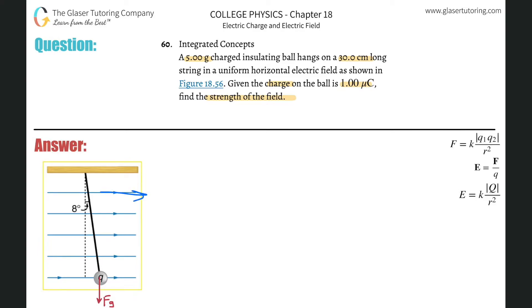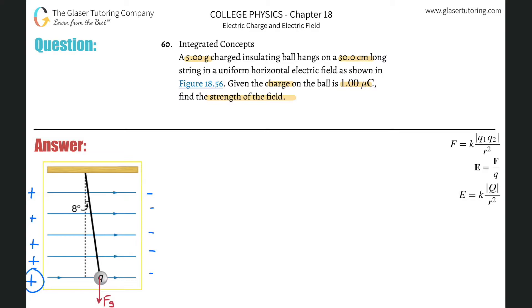The electric field lines in the problem are pointing to the right, meaning there's negative charge on the right and positive on the left. The ball is positively charged — one micro coulomb, and since it's not stated as negative, it's positive. A positive ball will be attracted to the negative side and repelled by the positive side, so there's a force vector pointing to the right. I'll call that F_e.